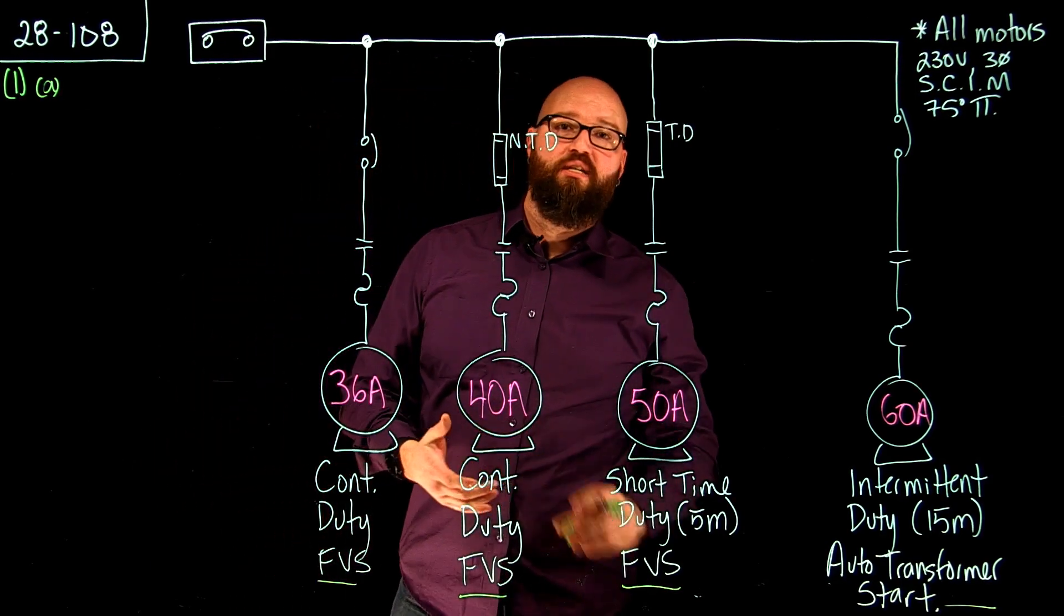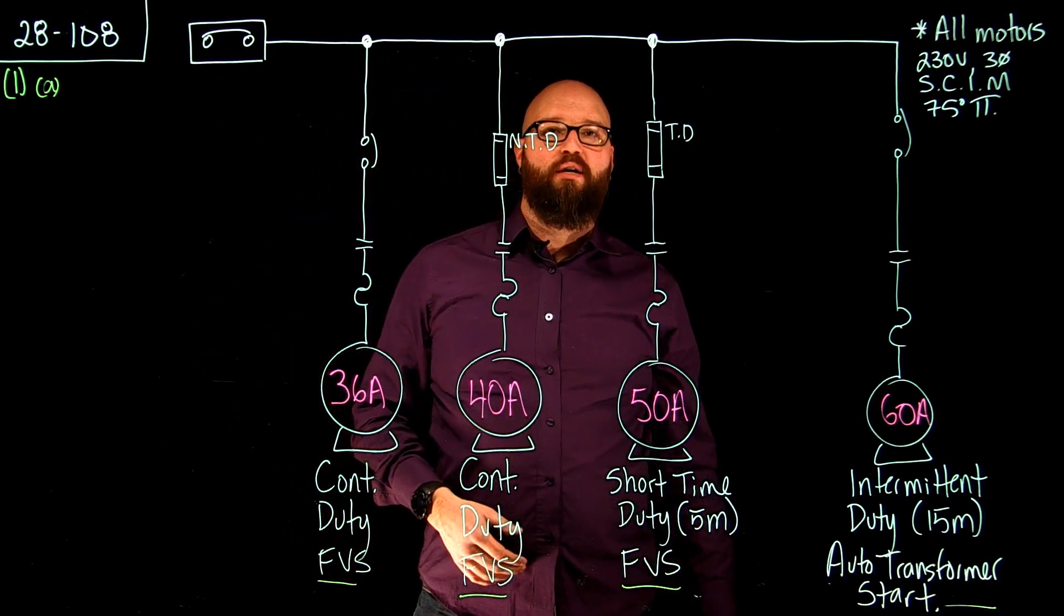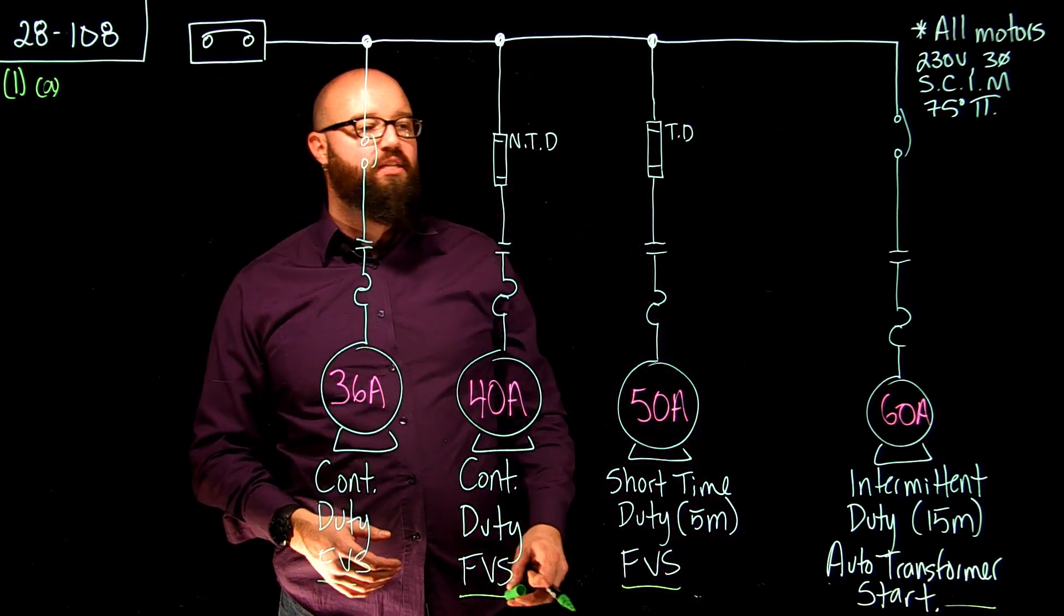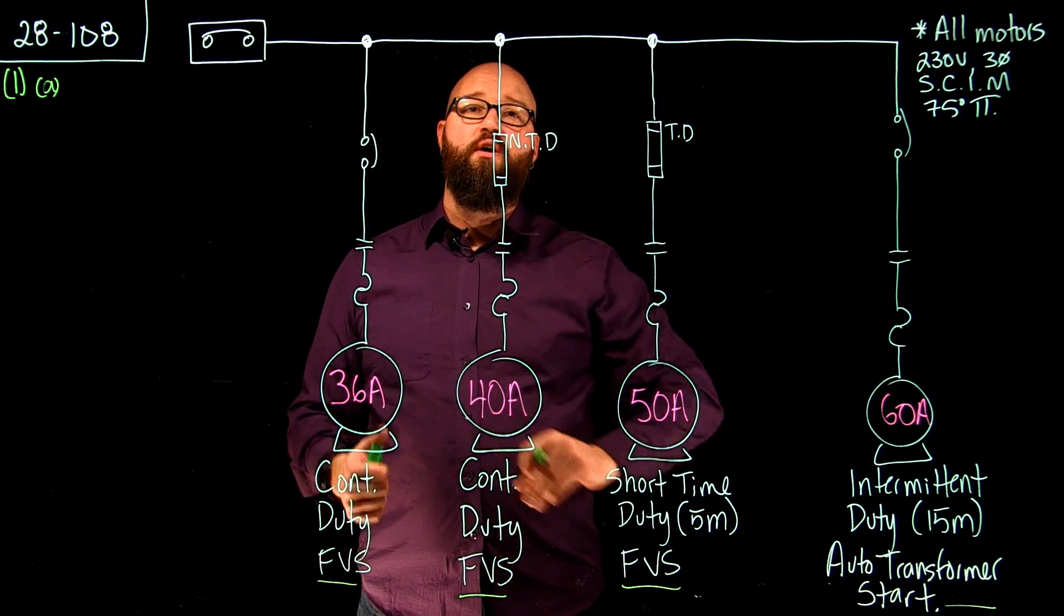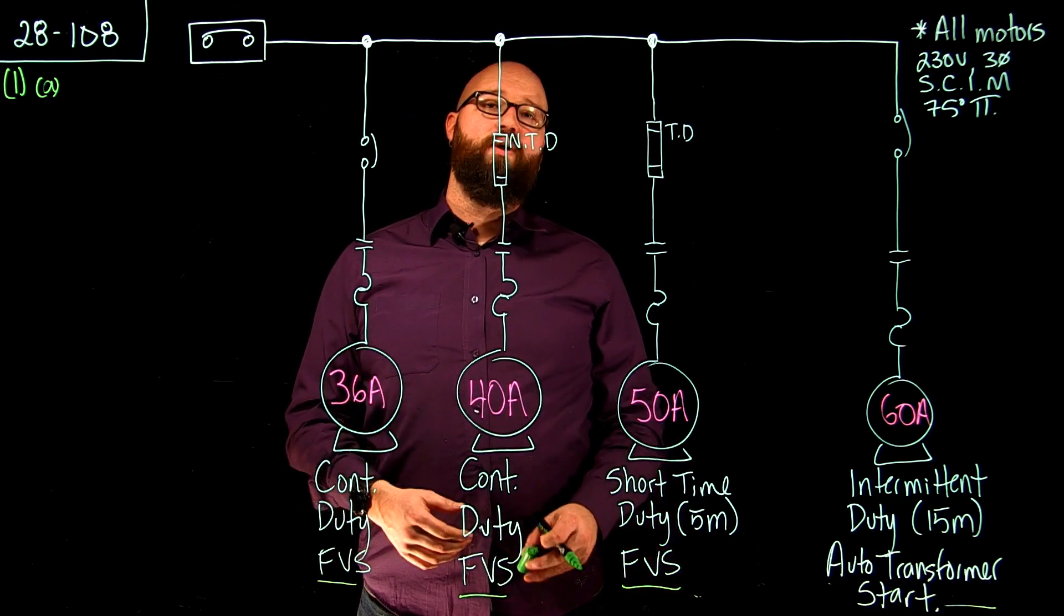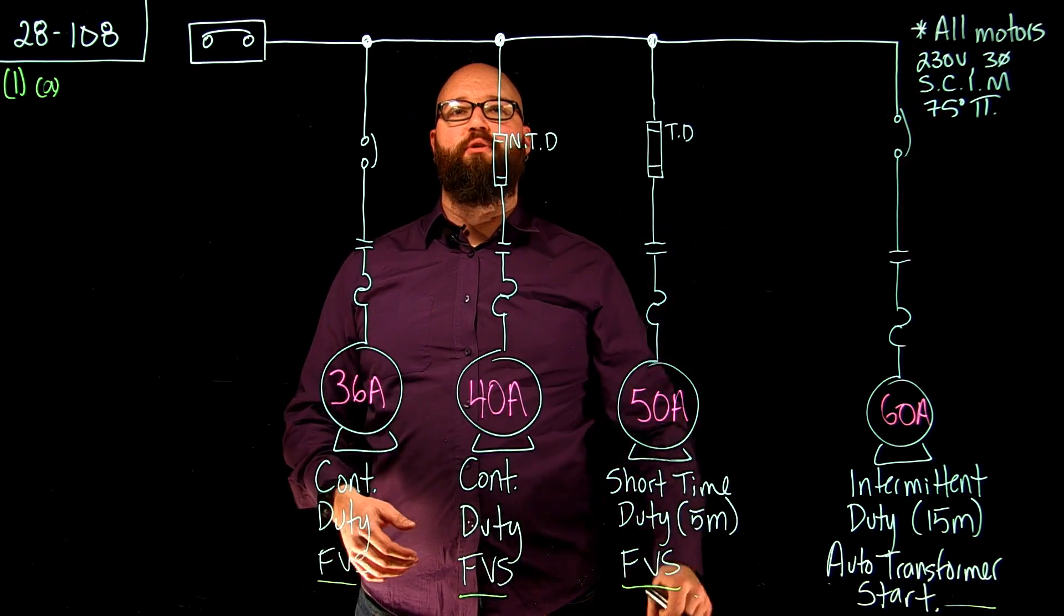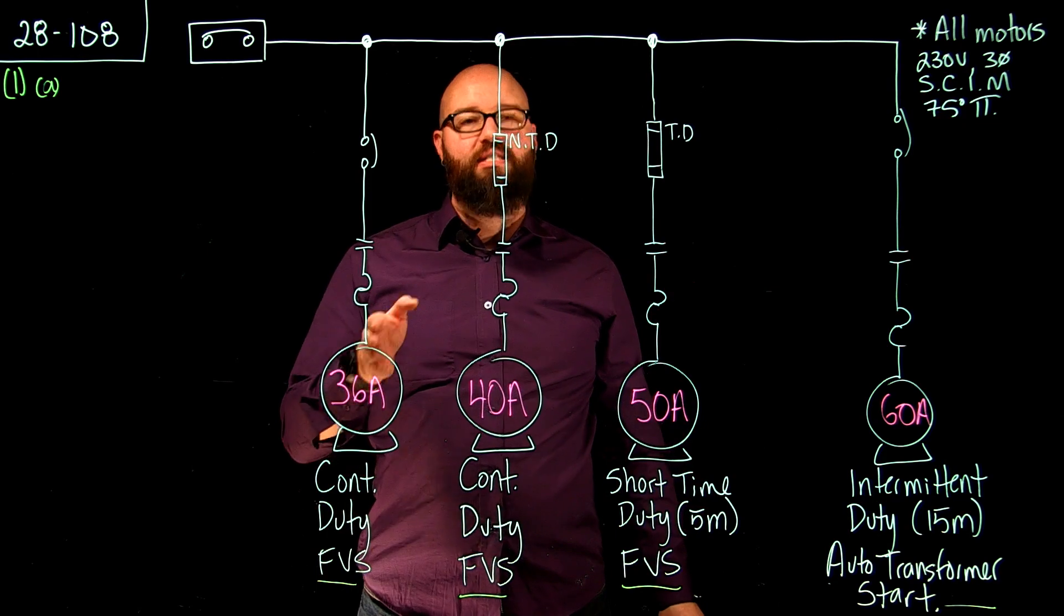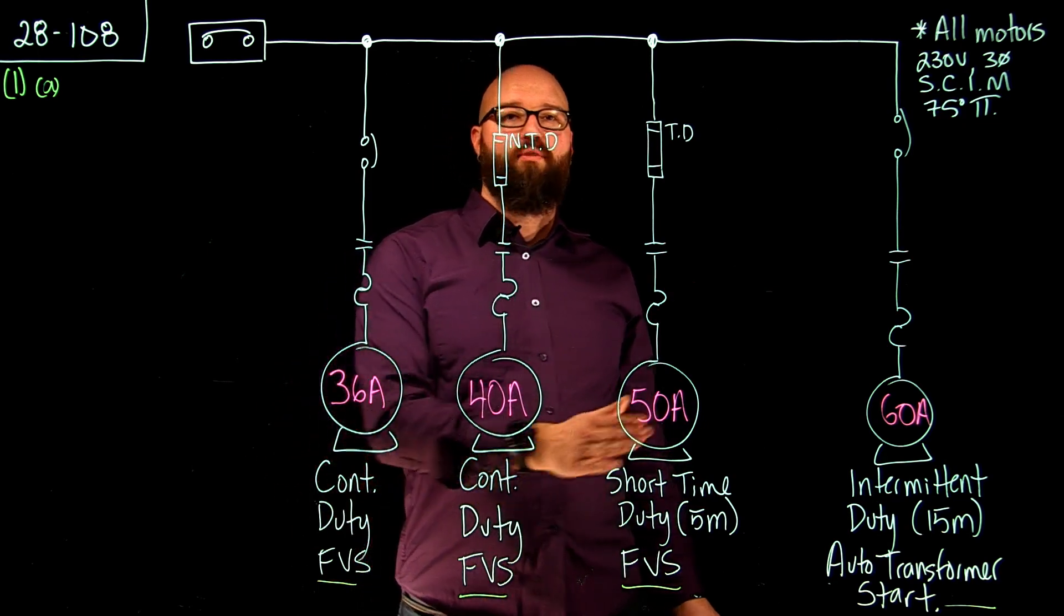The first thing I want to discuss is Item A in Sub Rule 1. Item A discusses what happens if all of our individual motors are continuous duty. Because again when we're talking about conductors we don't care about the individual information about the motor. What we really care about is the FLA as well as the duty rating of the motor.